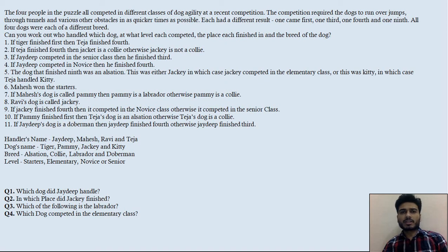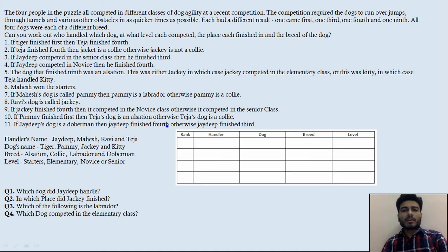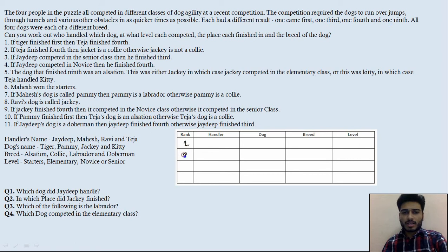This is a basic matrix arrangement — we need to form a matrix and fill in all the values. Here is the table: there were four ranks — first, third, fourth, and ninth. The four variables are handler, dog, breed, and level. Now let's move to the conditions.